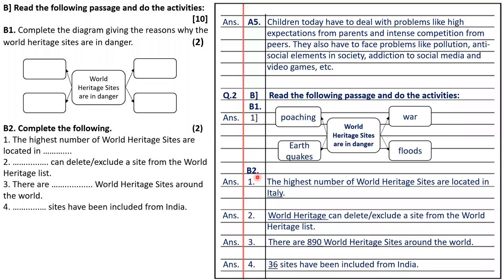Answer B2, complete the following: the highest number of world heritage sites are located in Italy. Second, world heritage can delete or exclude a site from the world heritage list. There are 890 world heritage sites around the world. And 36 sites have been included from India.